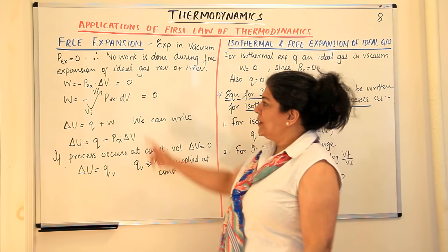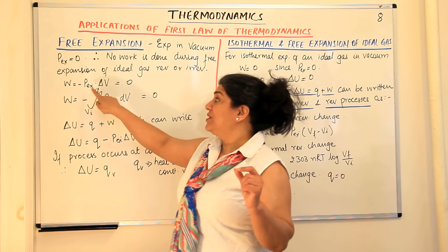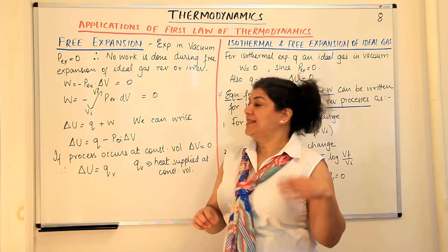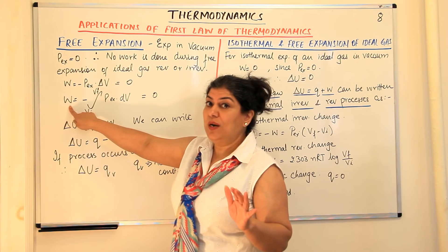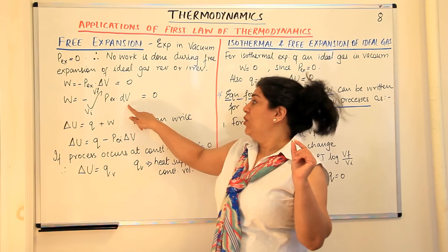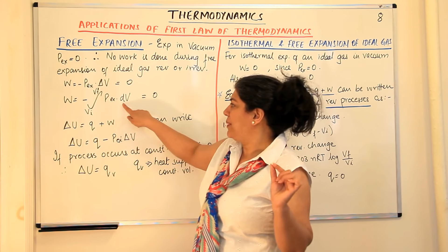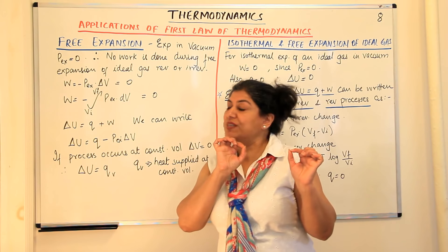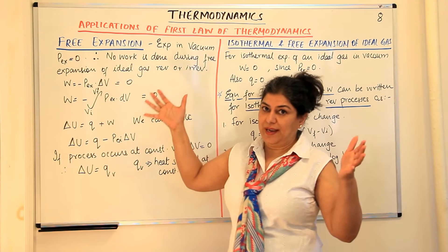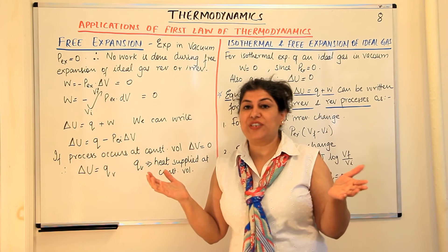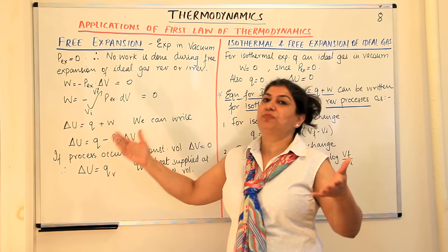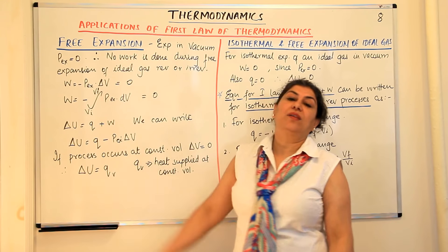Work done for an irreversible process is P external delta V, which is zero. And for a reversible process, the work done is the integral from V_I to V_F of P external dV, where every step was a very small step and the difference in volume was very small, dV. This would also be equal to zero because whether expansion or contraction takes place in a finite number of steps or in infinite small steps, in both cases it is pushing against nothing, so work done would be zero.